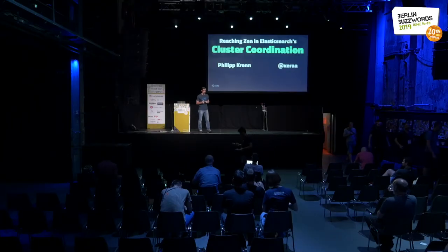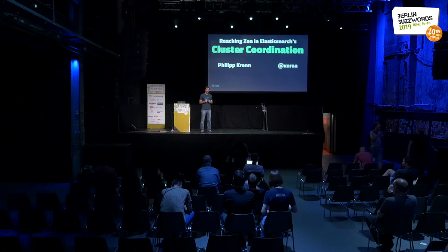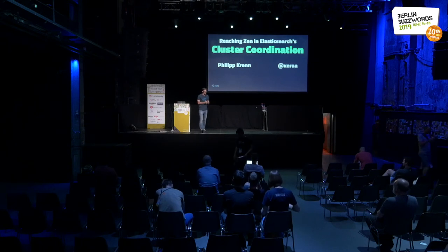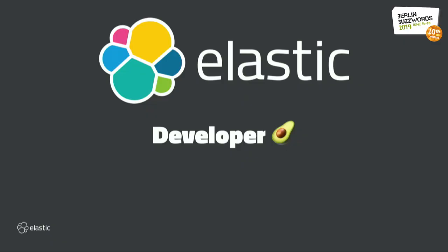Hi everyone. This is a bit of a theoretical topic, so let's see how dry it will be. I assume that everybody has an idea what Elasticsearch is, so we don't need to cover shards, indices, nodes, and stuff like that — we'll just build on top of that. I work for Elasticsearch, the company behind the entire stack. My official role is developer advocate, so I mostly travel around and show what we're changing or trying to build.